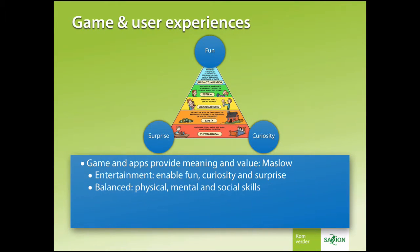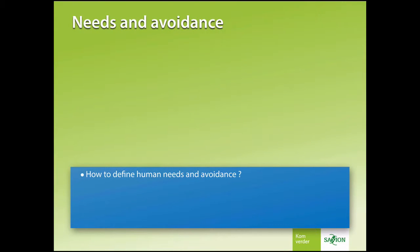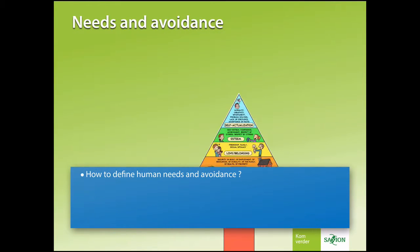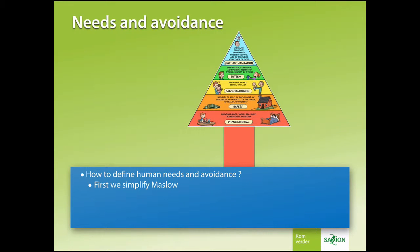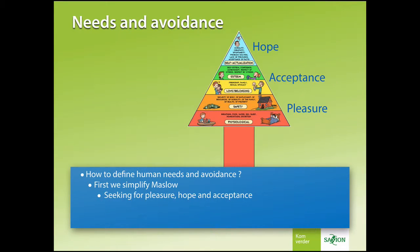Because every player is not exactly the same, we need to balance it towards the physical, mental, and social skills of that player. If we are able to determine what players need, then could we determine what players don't need, what they would like to avoid in games? Let's start with the simplification of the Pyramid of Maslow. It's about seeking for pleasure, hope, and acceptance.